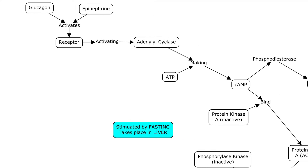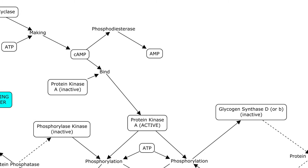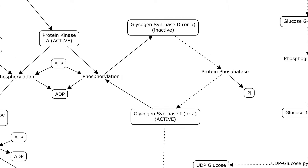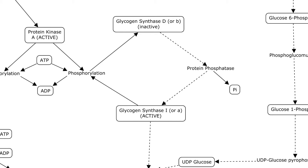Next, let's look at how glucagon and epinephrine stimulate the breakdown of glycogen into glucose. When your glucagon levels get high — for example, if you haven't eaten in a while — glucagon or epinephrine will activate a receptor, which activates adenylyl cyclase, which takes ATP and makes cyclic AMP (cAMP). The cAMP binds protein kinase A, which is originally inactive, but when bound by cAMP it becomes active and phosphorylates everything it can find. In this case, phosphorylation of glycogen synthase A, which is normally active when not phosphorylated — it gets phosphorylated and becomes inactive.